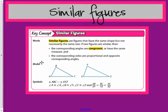If we have two figures and all of their angles are congruent, then they're similar. If all of their angles and their sides are congruent, then they're congruent.